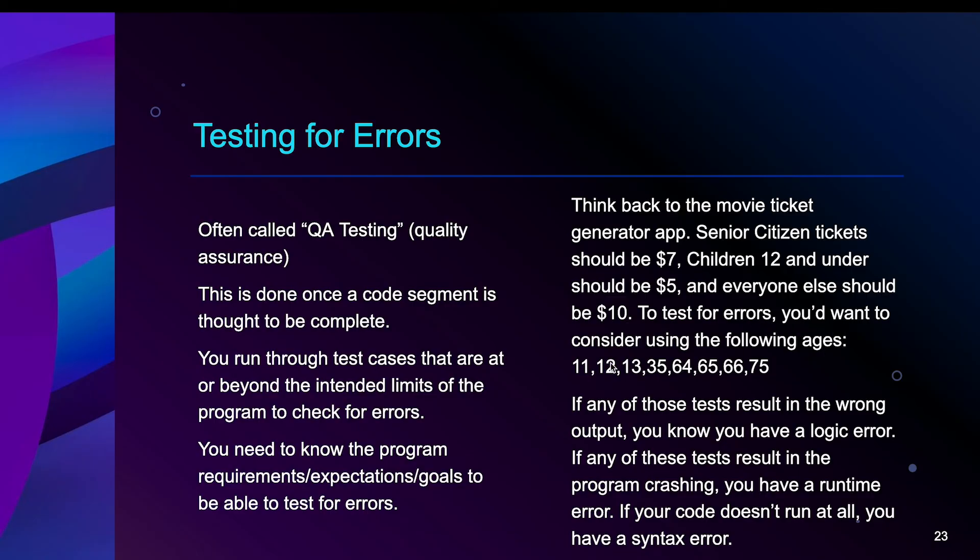The way you would test for that was you would input different ages. Some examples you might want to try would be 11, because that is less than 12. That should give me a $5 ticket. 12, because I say children 12 and under, I'd want to test that to make sure 12 gives me $5. Then 13 is one beyond that. Then I want to try a few numbers between 13 and senior citizen age, which is generally 65. So I tried 13, I'd try 35 in the middle, 64 one less than the limit. And then 65, that would be senior citizen, should be $7. 66 should be $7. 75, just going a little bit above, should be $7.